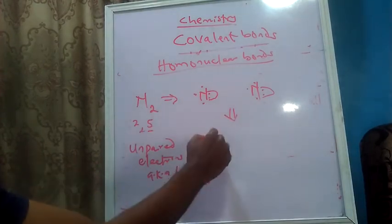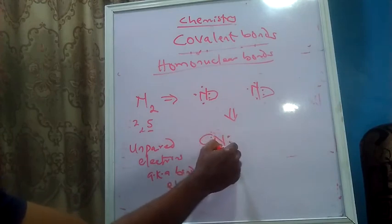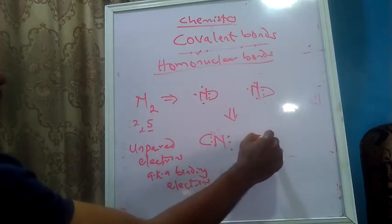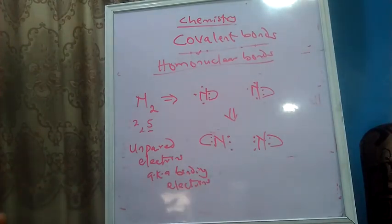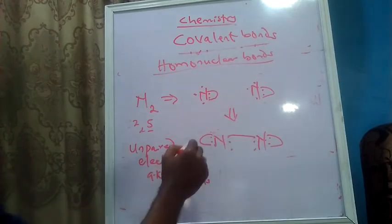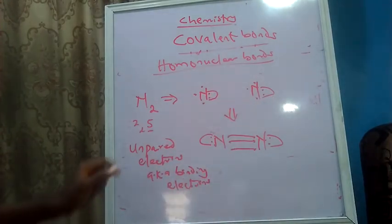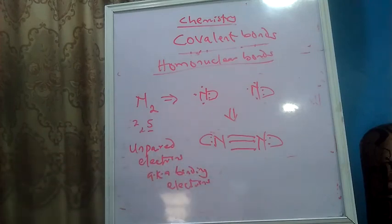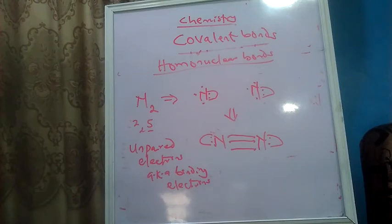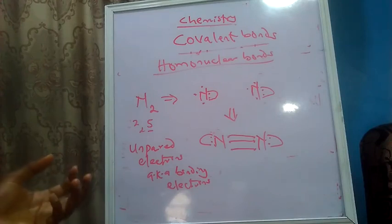I rearrange this again: the paired electron goes to one side, and the unpaired electrons are placed side by side to establish a covalent bond — a homonuclear covalent bond. The first unpaired of the first nitrogen bonds with the first unpaired of the second nitrogen, forming the first bond; the second with the second; the third unpaired with the third, forming the third bond. N2 is formed using three covalent bonds — a triple bond. The bond holding Cl2 is a single bond, the bond holding O2 is a double bond, and the bond holding N2 is a triple bond.